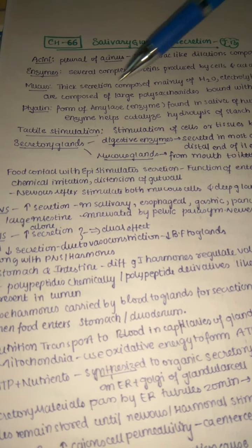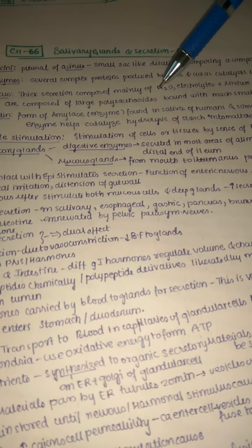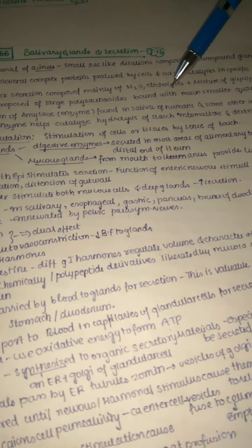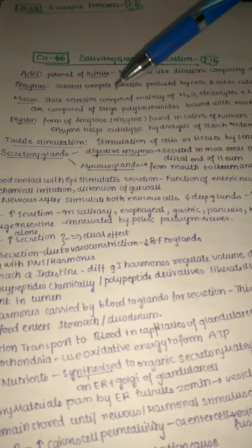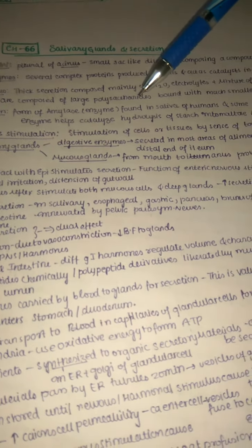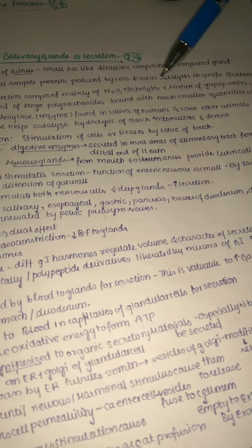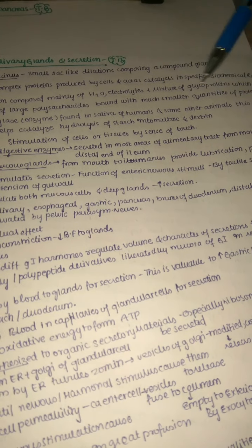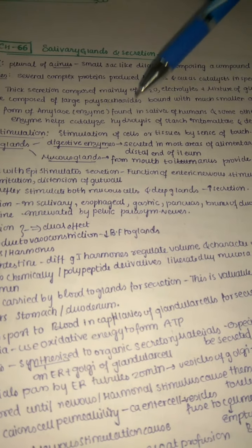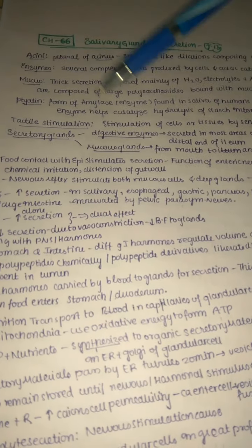Mucus is a thick secretion which is mainly composed of water, electrolytes, and a mixture of glycoproteins. These glycoproteins are composed of large polysaccharides and they are bound with smaller quantities of proteins. So mucus contains water, electrolytes, and glycoproteins like large polysaccharides bound with smaller quantities of protein.